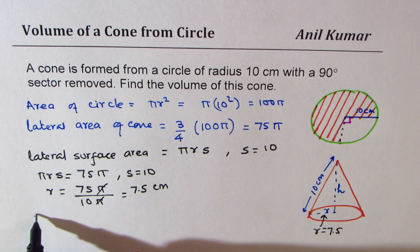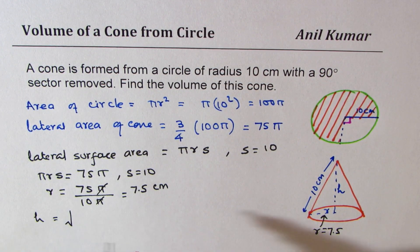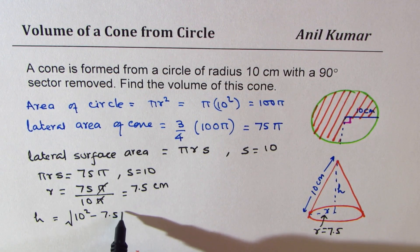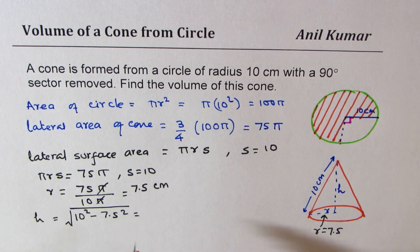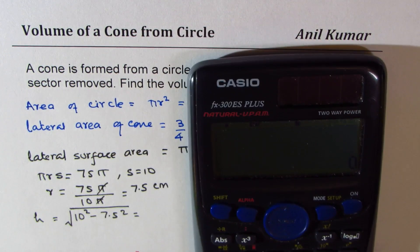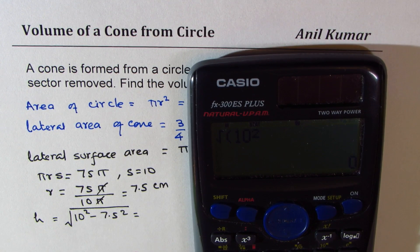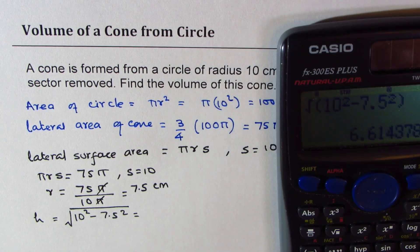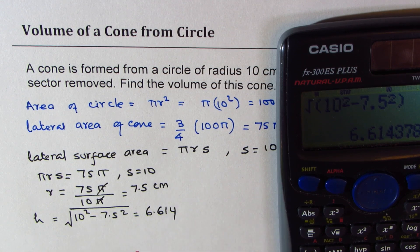We can find the height. Pythagorean theorem can be applied. Height will be 10 square minus 7.5 square square root. So let's calculate the height. It is square root of 10 square minus 7.5 square, which gives us 6.614.